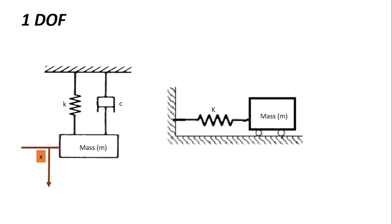We can have the same system but this time rather than vertical up-and-down movement, we can have a horizontal movement of the mass, such that the mass undergoes to-and-fro motion along the horizontal axis. We can describe the position of the mass and the spring displacement at every point in time by a linear dimension x.